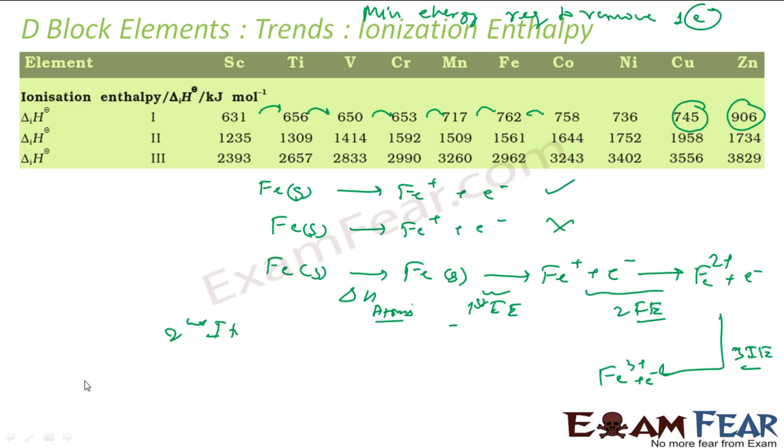Copper is 3D10 4S1. If I would lose my electron and it becomes 3D10. This is more stable. Little stable.